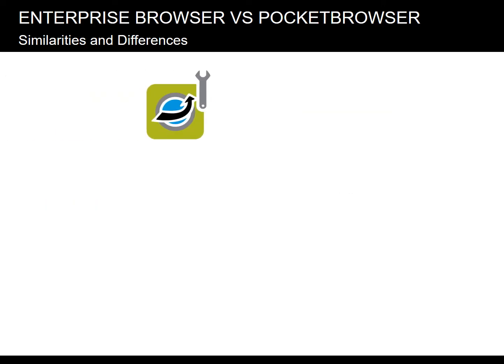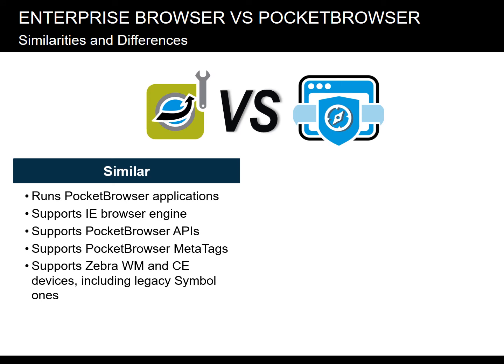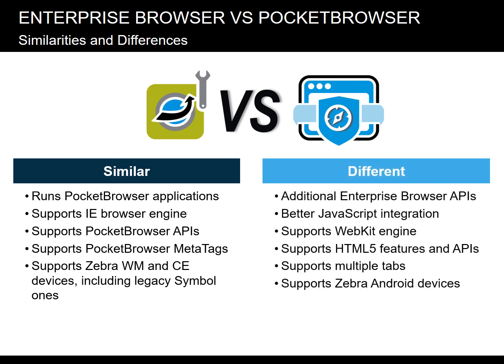So how exactly does EB compare to Pocket Browser? Enterprise Browser is similar to Pocket Browser in that it can run Pocket Browser applications and it can be set to use and configure the Internet Explorer browser engine. Enterprise Browser and Pocket Browser both support MetaTags and the InvokeMeta function. They both also support Zebra Windows Mobile and Windows CE devices. Enterprise Browser differs from Pocket Browser in that it also provides support for Rho elements, Rho mobile, and HTML5 APIs. Support for the WebKit WebView is available in Enterprise Browser and not in Pocket Browser. In addition, Enterprise Browser also supports Zebra Android devices.